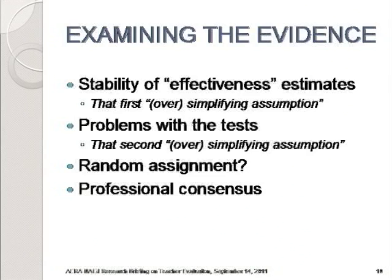My third bullet — random assignment — refers to a strong and important assumption required by these models. Professor Rothstein will have more to say about this in a few minutes. I've also included just two quotes from experts, which are a sample from the Economic Policy Institute briefing on which Linda Darling-Hammond and I were among the ten co-authors. Turning to this first topic — the stability of effectiveness estimates — this question asks whether value-added model estimates are reliable.